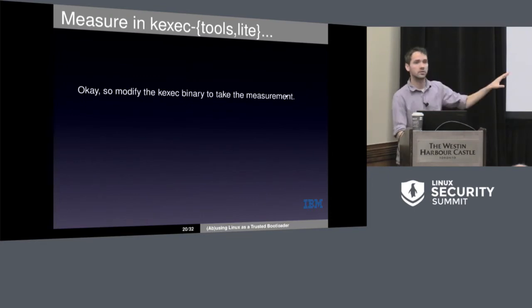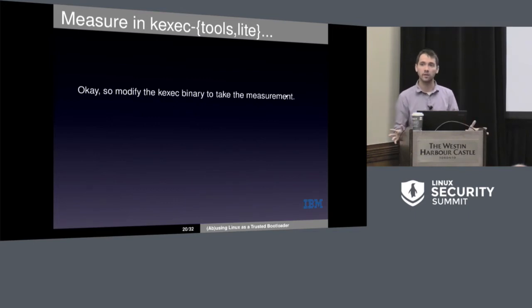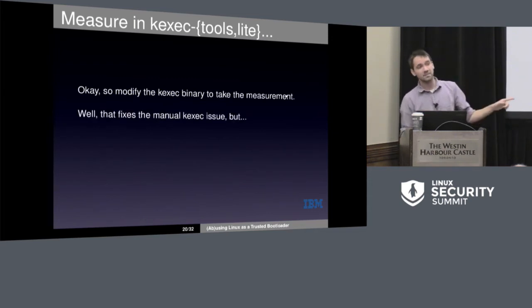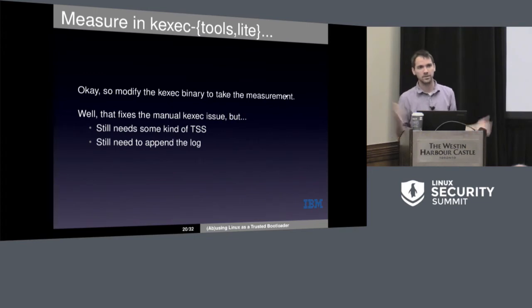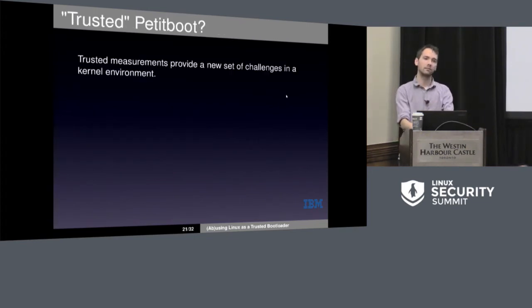Let's just change the kexec tools — there's a little binary that actually kicks off and does all the syscalls for us, so let's modify that and have that do the measurements. It fixes the manual kexec issue, but the other two issues are still there. Back to the drawing board — what do we need?